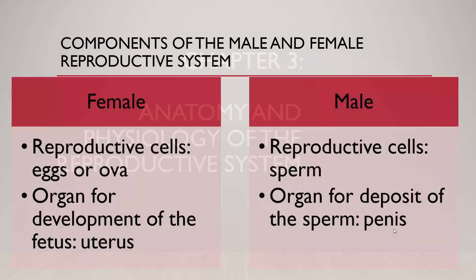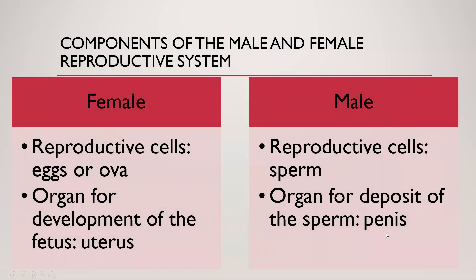When we're talking about our anatomy, the components we're going to be focusing on specifically for the female are the reproductive cells, which are eggs or ova, and the organs for the development of the fetus, which is the uterus. When talking about the male reproductive system, we're talking about sperm and the organ that deposits the sperm, which is the penis.